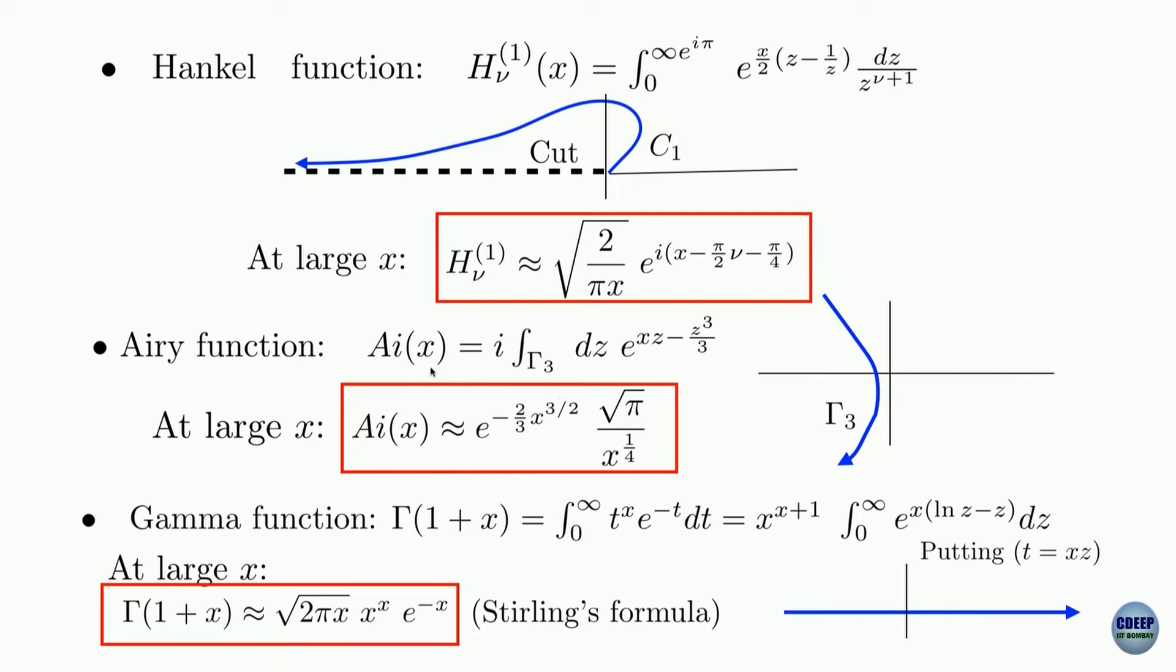Now there is a second function I have written here, Airy function. It is represented as a contour integral in complex plane coming somewhere from this corner in the second quadrant and going to the other corner in the third quadrant. Why these kind of angular approaches—you can learn later in the next semester how such integrals for Airy function arise.